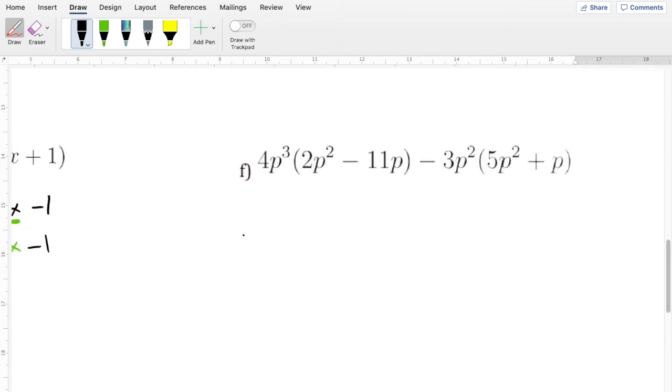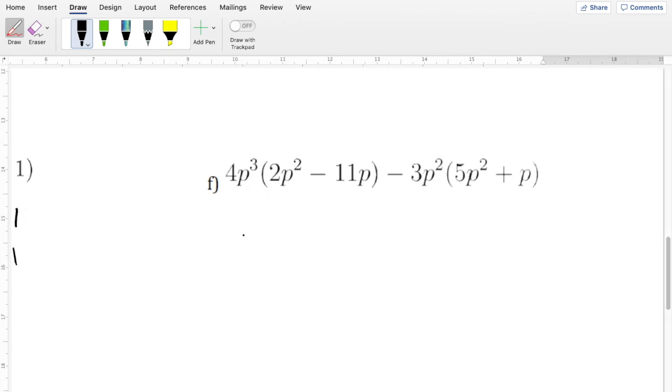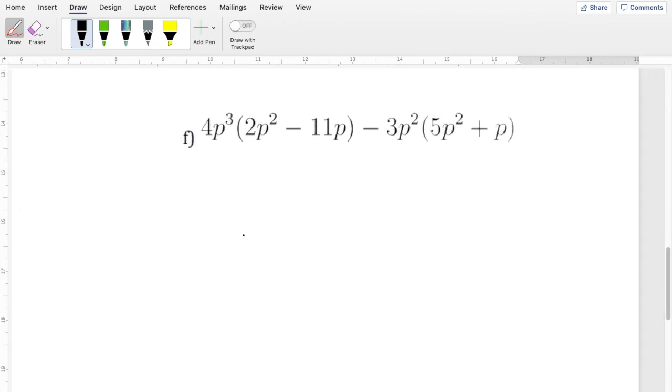And our last example looks more and more difficult, but it's the same idea. They're just bigger exponent numbers, but we've worked with that before. So, first thing we do, we distribute to get rid of the brackets. So 4 times 2 is 8. Then we're going to have this, and 2, 3 plus 2 gives us 5. Then 4 times 11 is going to be negative 44. And remember there's a 1 here. So 3 plus 1 is 4.